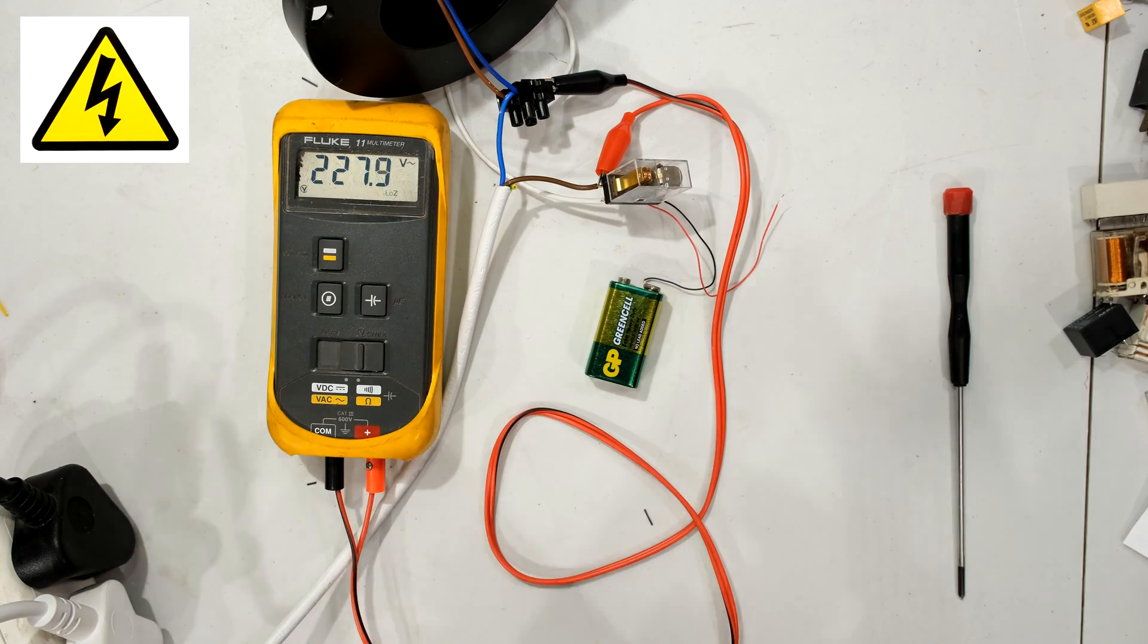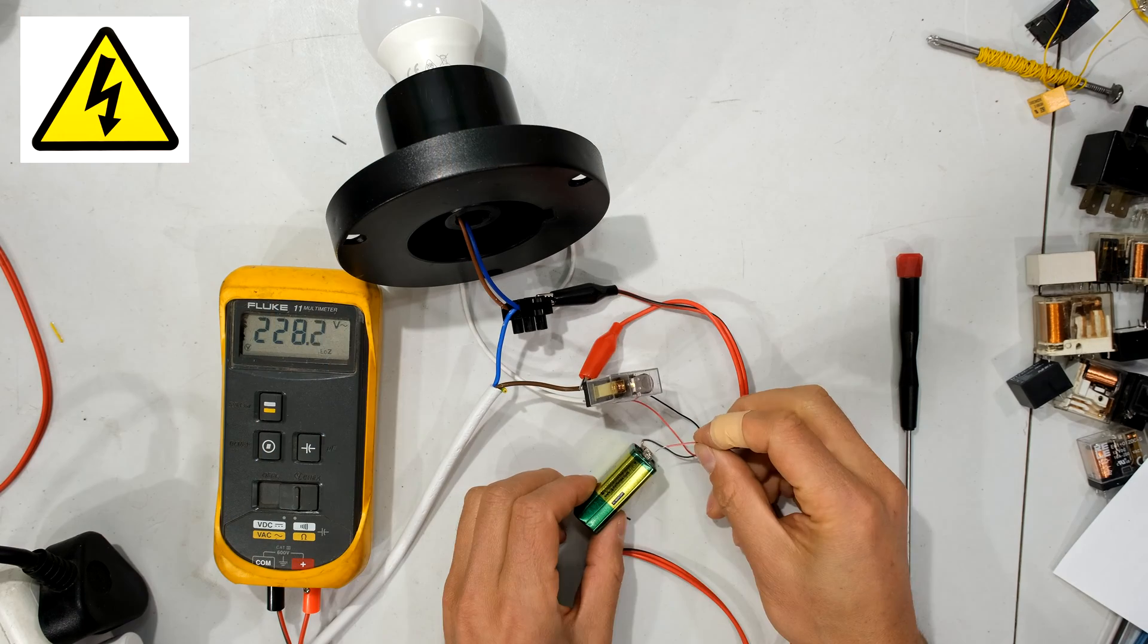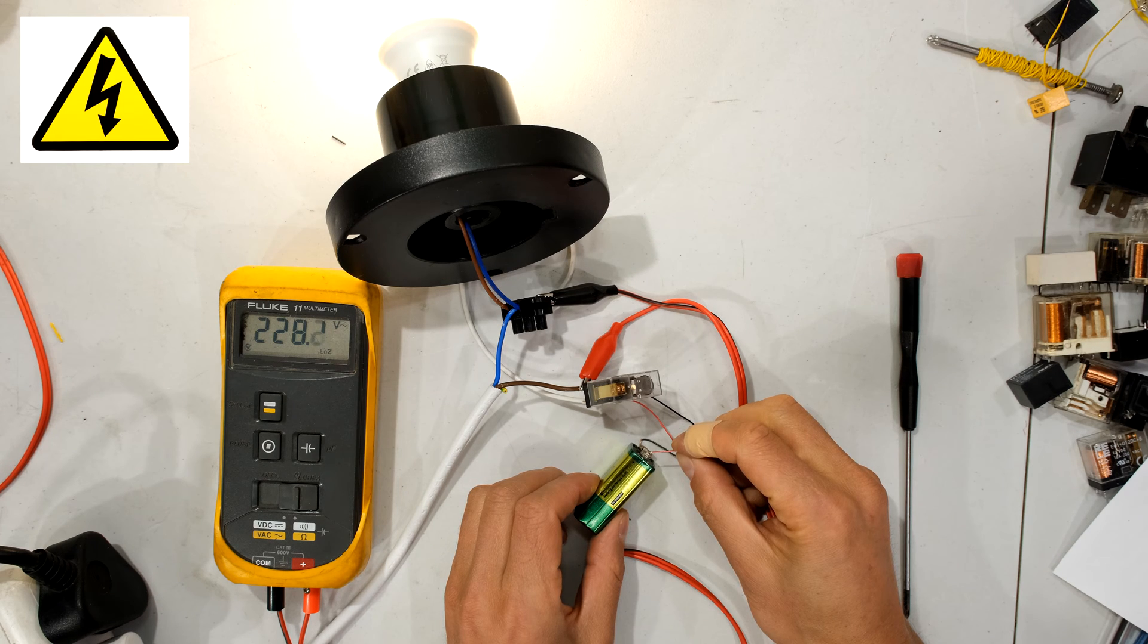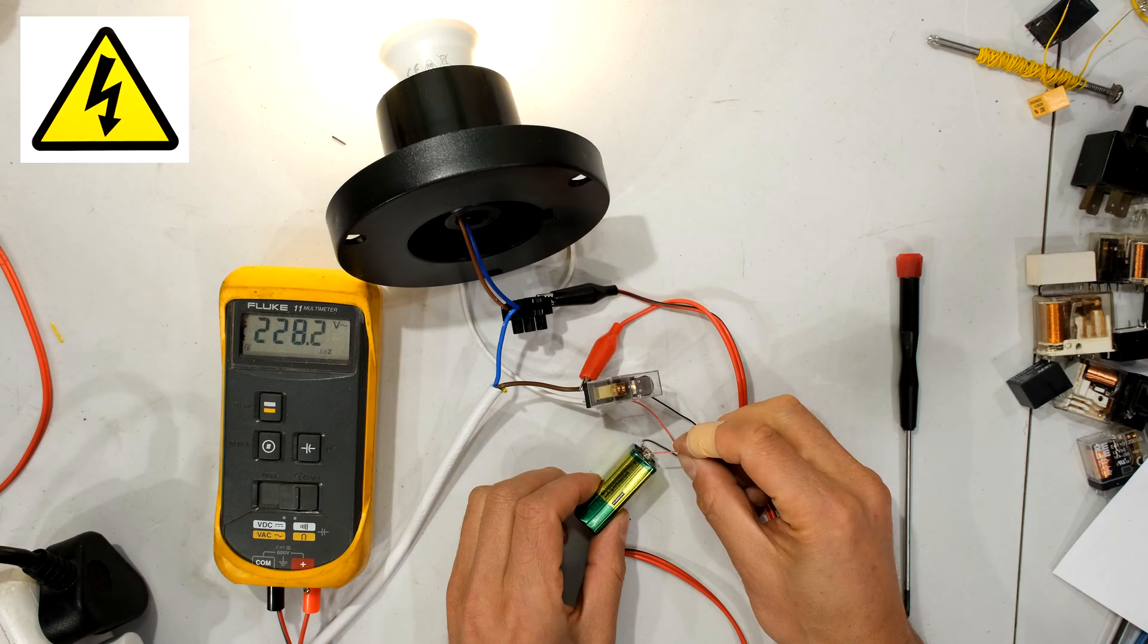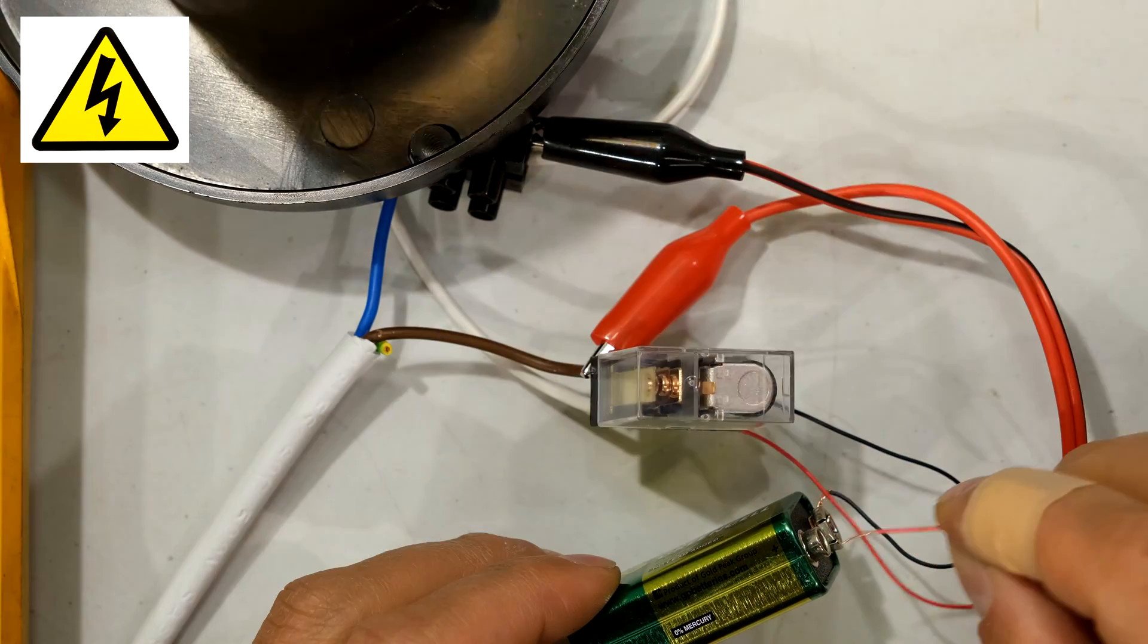Right so there we see the meter showing 228 volts and at the moment the light is off. But when I activate the relay using my battery you can see how the light is now on. So I'm using the DC circuit to control that AC circuit. Look at that. So there you can see the light is on and then it is off.